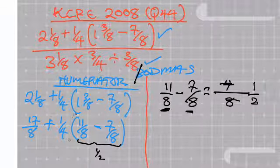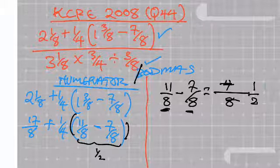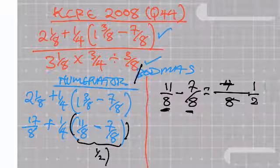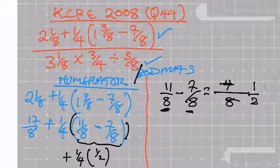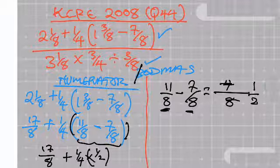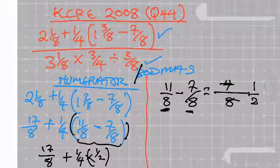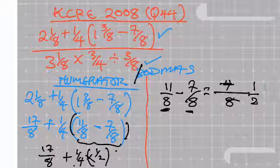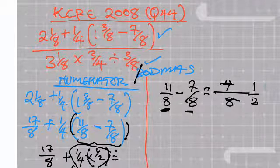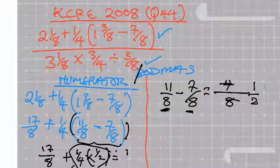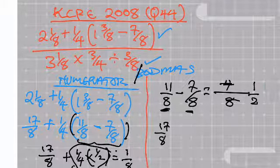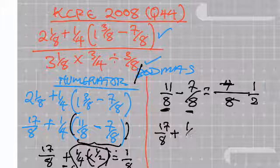This half is the answer of what is in the bracket. Now this should be multiplied by — remember there is a bracket here — so we have half multiplied by quarter, and then plus 17 over 8. So everything becomes half multiplied by quarter, plus 17 over 8. That gives me 1 by 1 is 1, and 4 by 2 is 8, so I get 1 over 8. Then I have 17 over 8 plus 1 over 8.